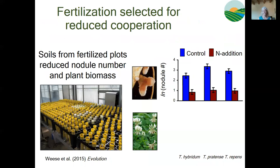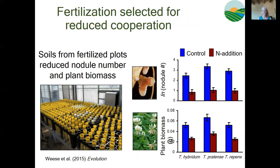Soils from fertilized plots were taken to the common environment of the greenhouse and grown with three species of clovers, which are shown along the x-axis here. Soils originating from fertilized plots reduced the number of rhizobia nodules on clover roots, which you can see here in the red bars. Soils from fertilized plots also reduced clover biomass, indicating that nitrogen addition in the field promoted soil microbial communities that were less beneficial to legumes. Thus, across all three clover species, fertilized soils resulted in fewer nodules and less plant biomass — reduced cooperation in this legume-rhizobia mutualism.